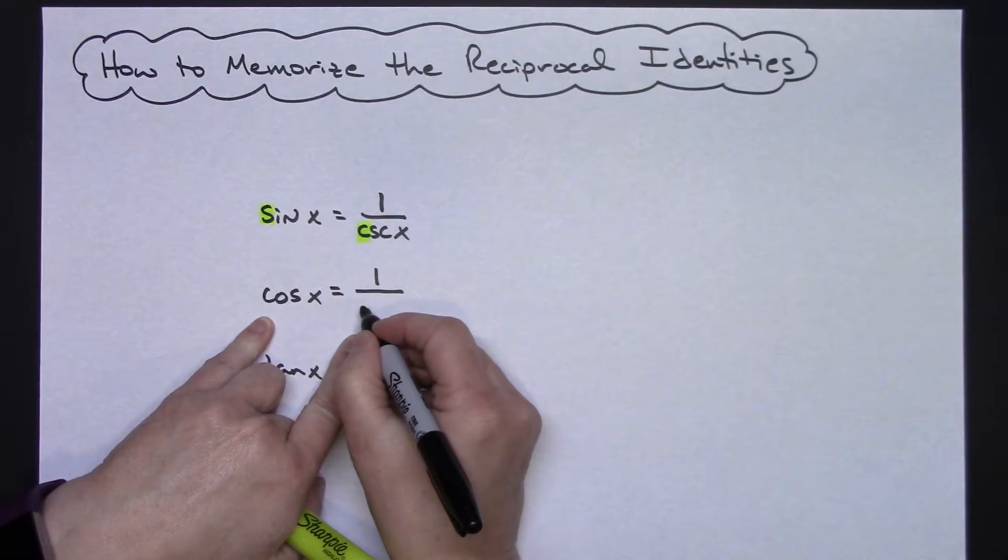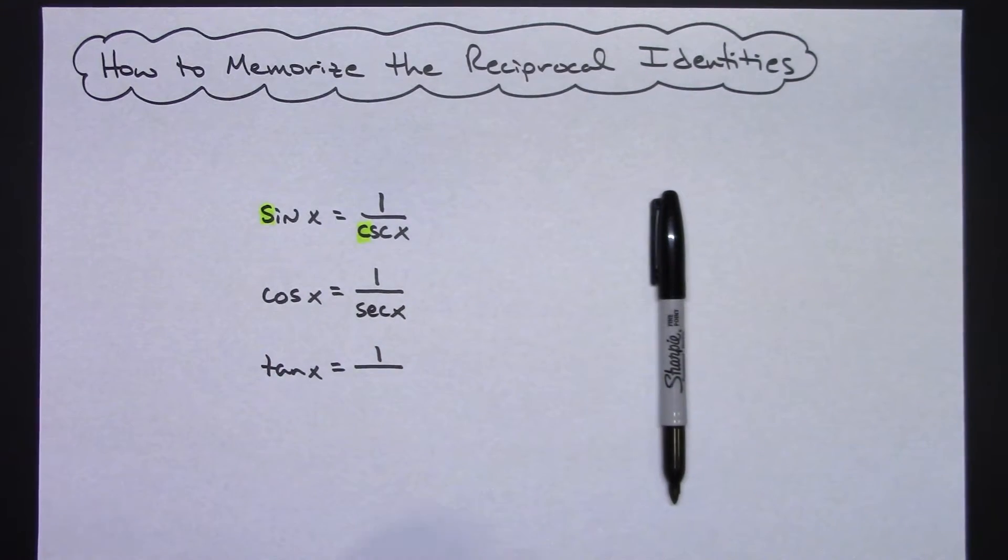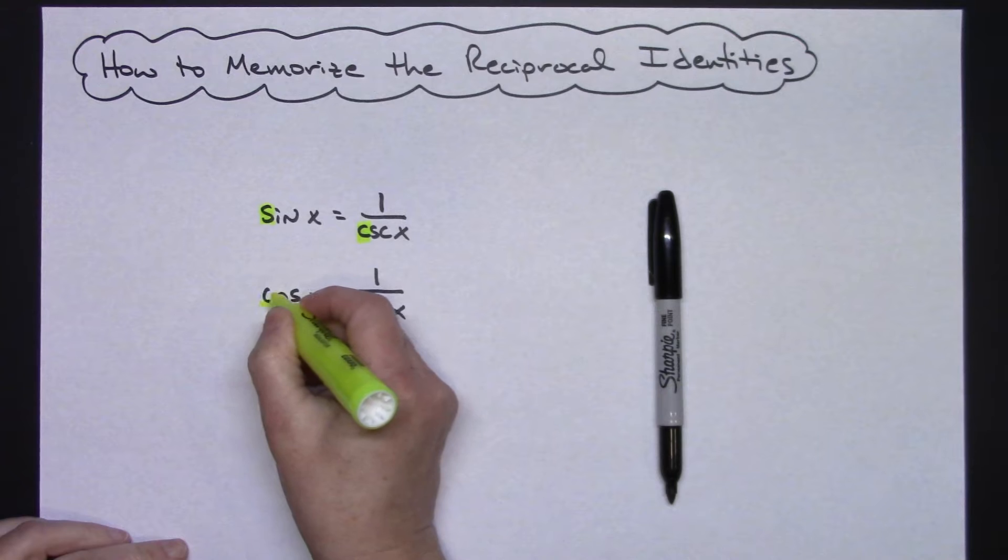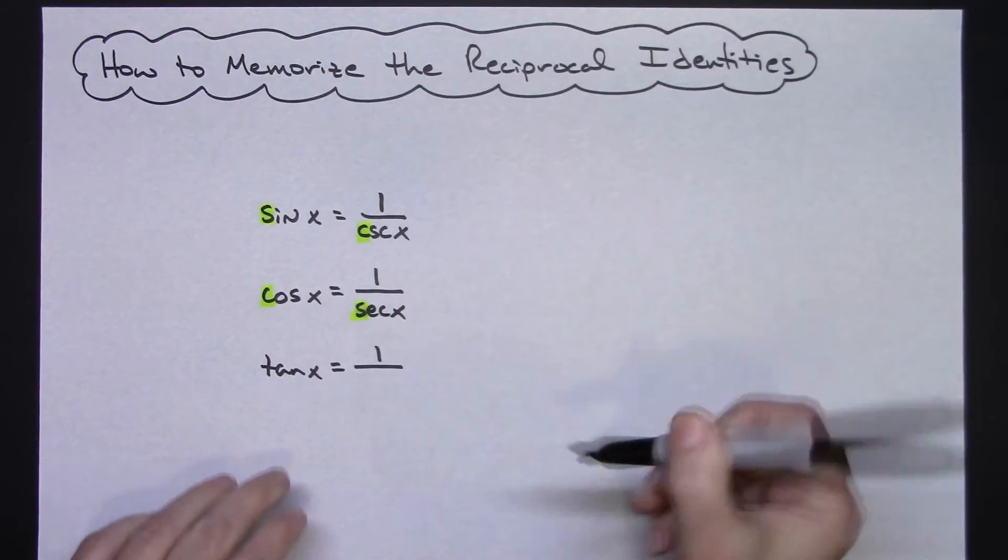So cosine, this one has to be then secant. And again, taking a look at the C there and the S there, that's how we remember opposite letters.